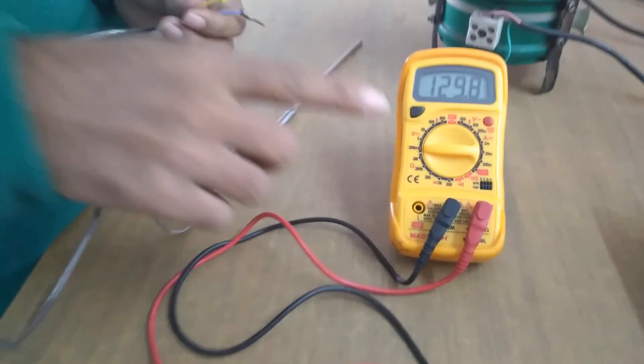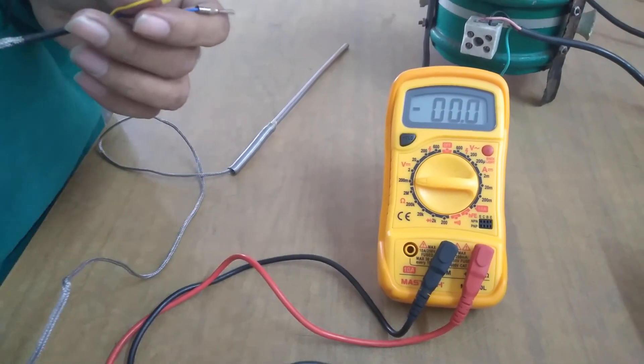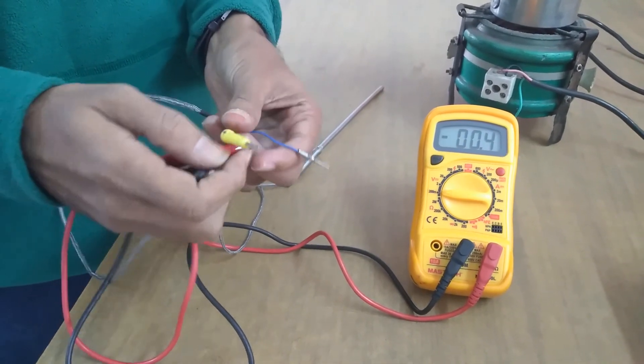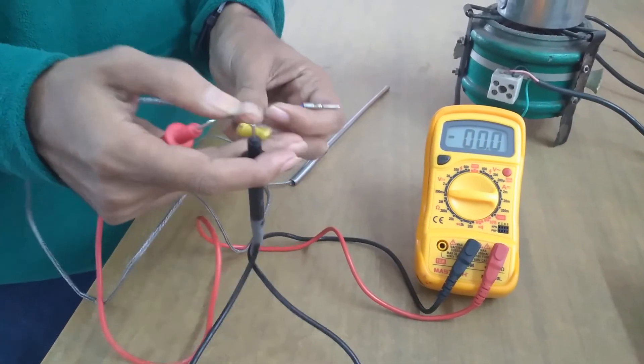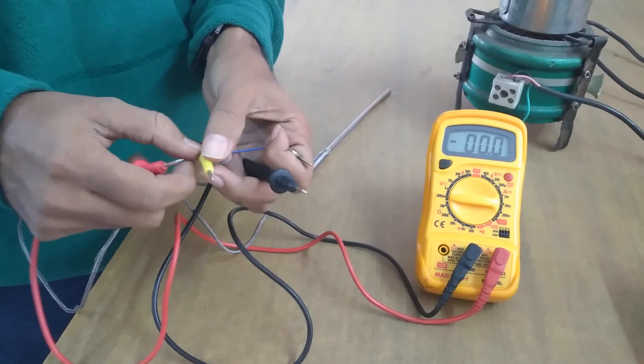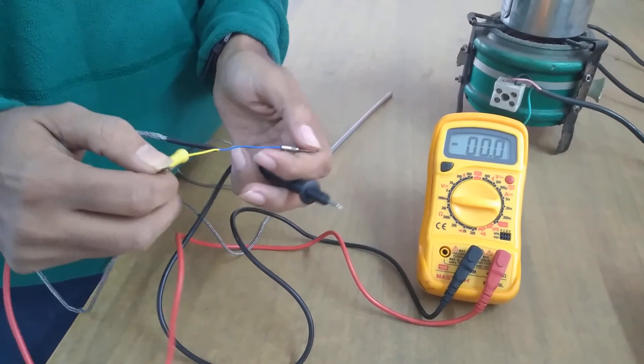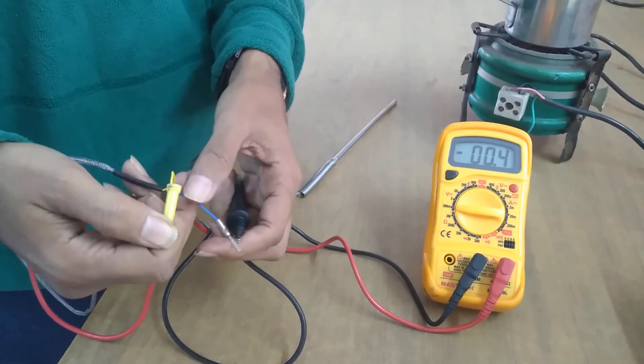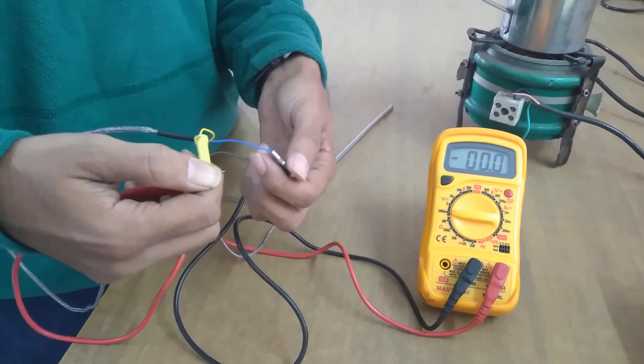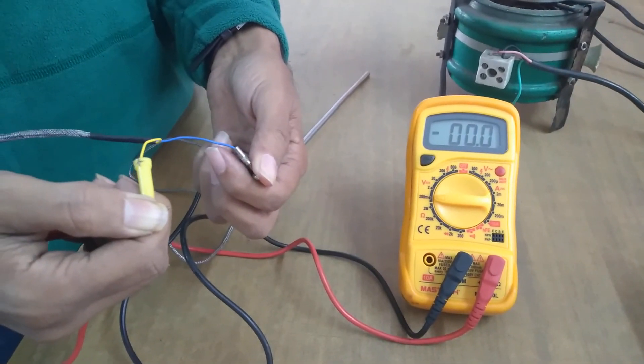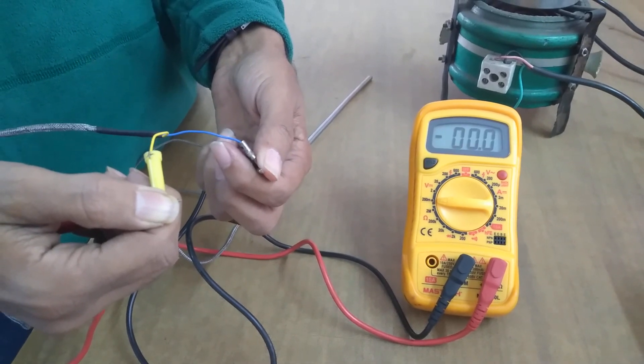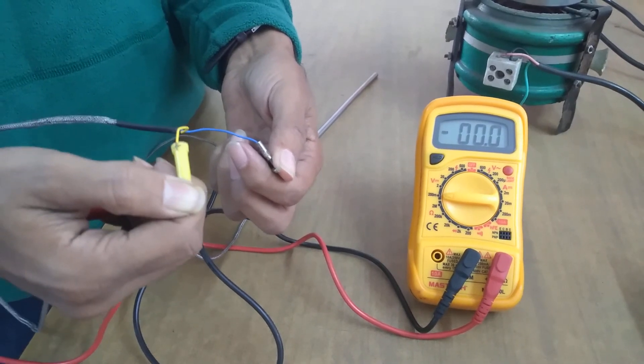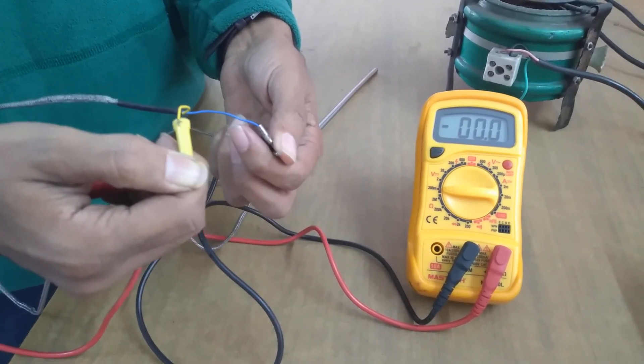So this is 200 millivolts and now we connect red to this positive terminal of the thermocouple and the black lead of the multimeter. We connect red to this yellow colored positive wire and black to the blue colored negative wire of the thermocouple. And so you can see that if TH and TC are at the same temperature which is room temperature at the moment, then the output voltage is equal to zero volt.